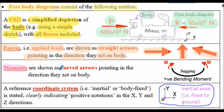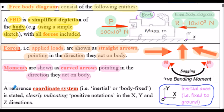Moments are shown with curved arrows, pointing in the direction that the moment acts on the body. For a sagging beam here, we have the applied moments to the body shown with clockwise and anticlockwise curved arrows. Also on free-body diagrams we have a reference or coordinate axis system — this can be an inertial axis system, considered usually fixed to the ground, or a body-fixed axis, an axis actually on the body itself.